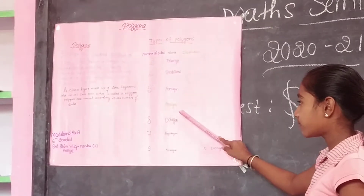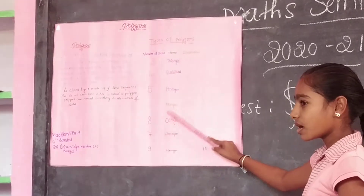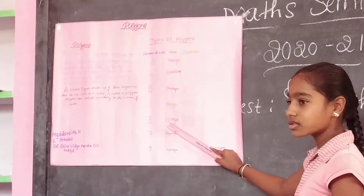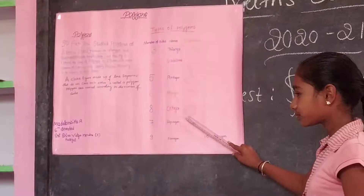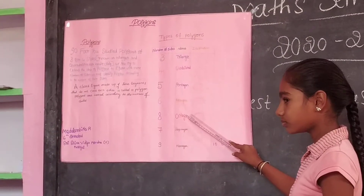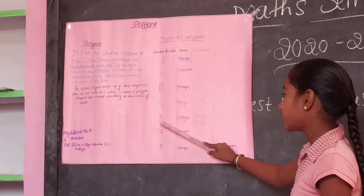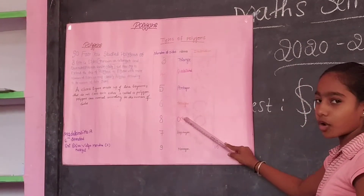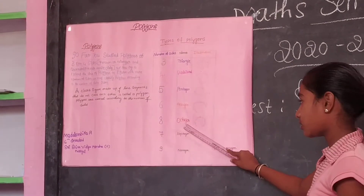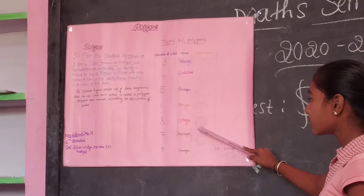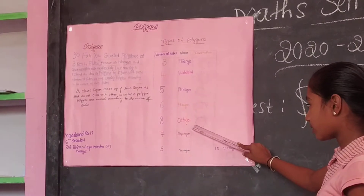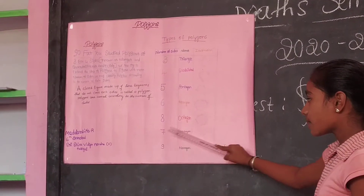Seven sides. Right-sided polygons. 1, 2, 3, 4, 5, 6, 7, 8.